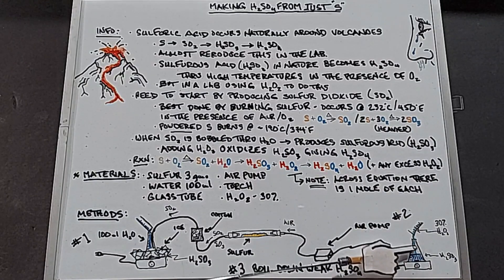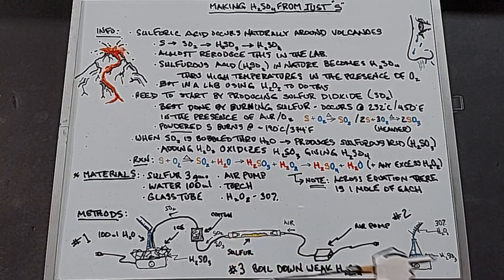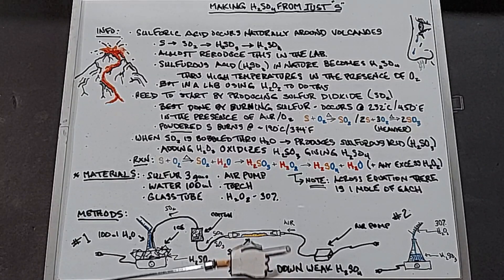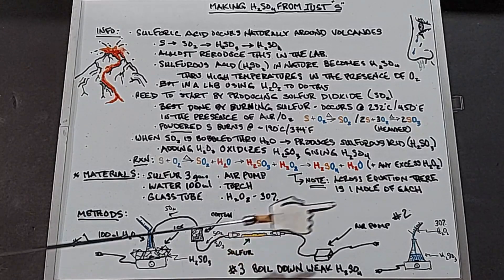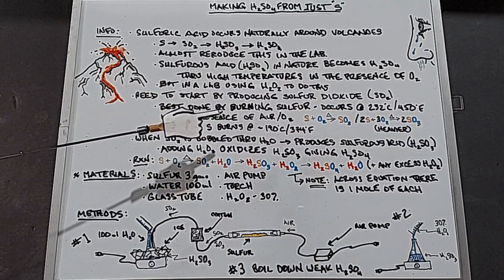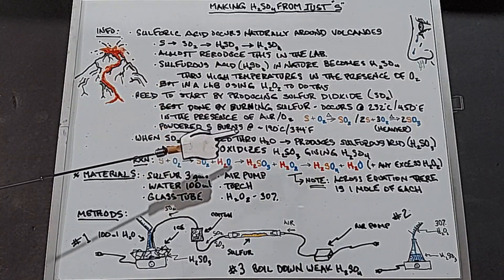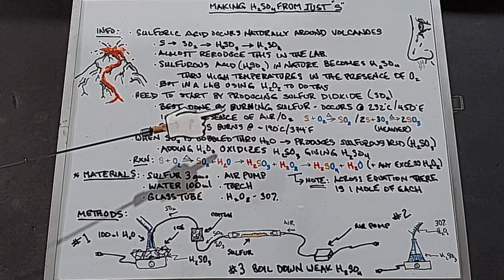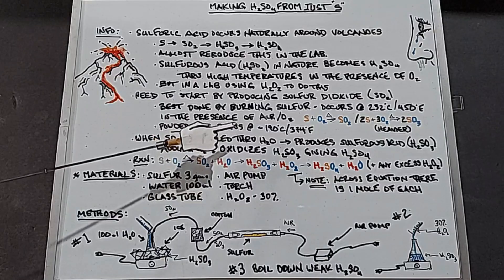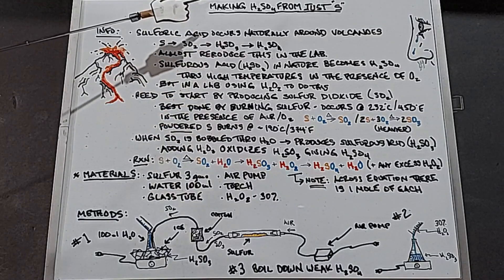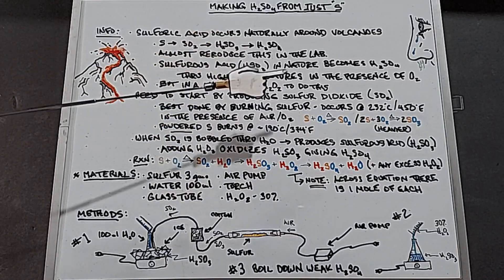Step two: we simply pour the hydrogen peroxide into the sulfurous acid and mix well. Step three: we take the resulting sulfuric acid, boil it down, then test it to confirm we actually have sulfuric acid. This experiment is just to see if it can be done successfully — I'm not planning to make a lot, just a little to test.